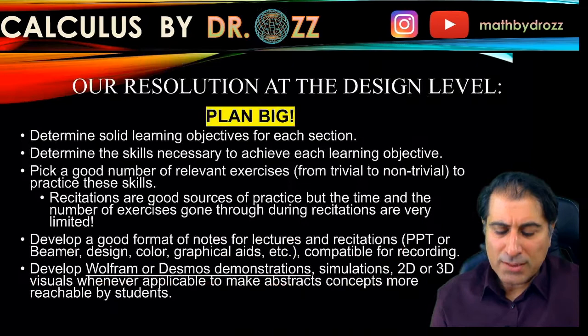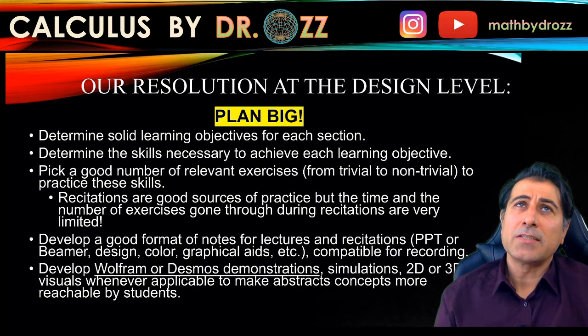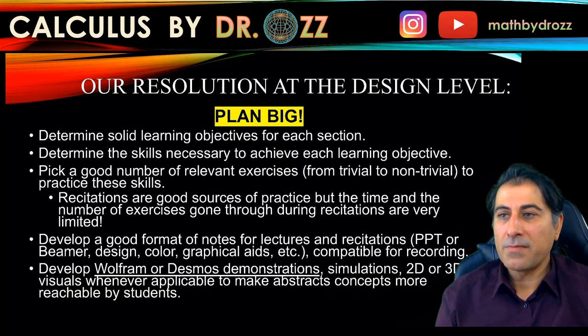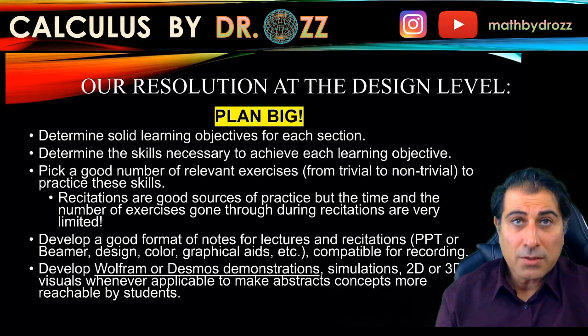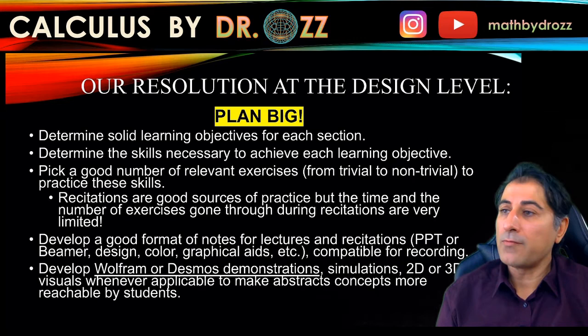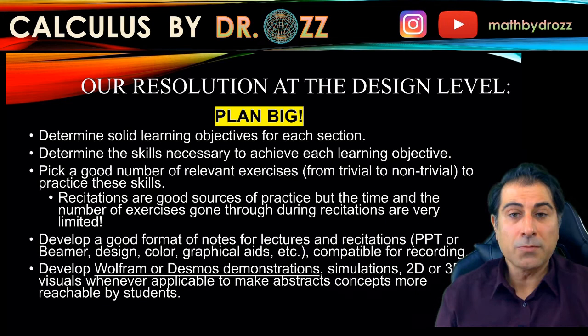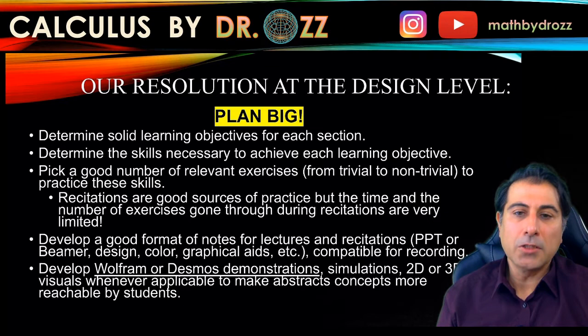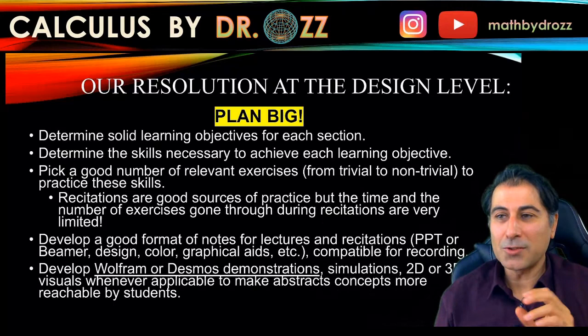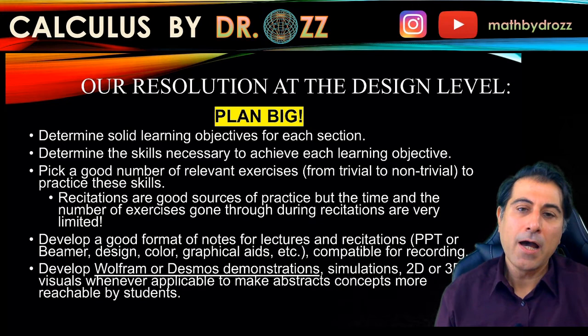What is our approach to solving the calculus content practice problem? First of all, you have to plan big — you can't make this plan during the semester, you have to plan ahead. I started writing learning objectives in a very solid way for each section, then determine the skills necessary to achieve each objective, and then pick a good number of relevant exercises — from trivial to non-trivial — to practice those skills. That's why I choose 8 to 15 homework problems per assignment.